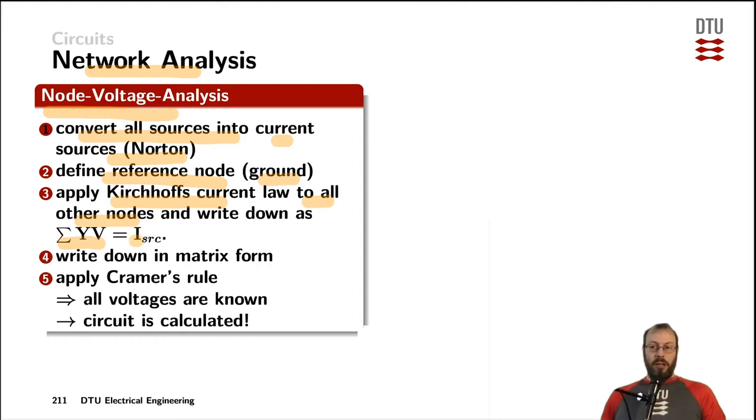On the other side of the equation, you put all the source currents that you have derived in the first step, and certainly only the ones that are relevant for each of those nodes. So for each node, you get one line of this equation.